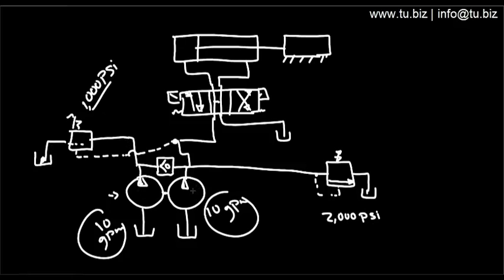The second pump, the flow cannot be dumped over in the other direction because it has a check valve in the middle, and the check valve does not allow flow going in the other direction. It does not allow flow going this way. It only allows flow going this way. So at 1,000 PSI, the first pump dumps over here, and now you only have 10 GPM feeding the directional control valve.